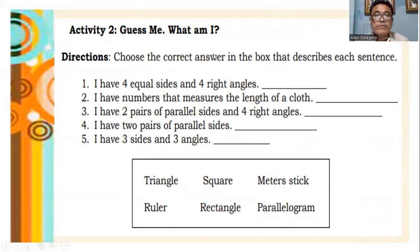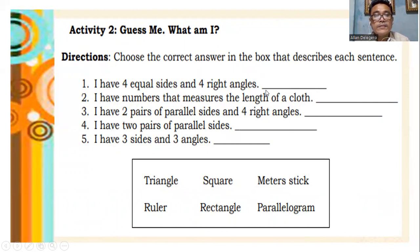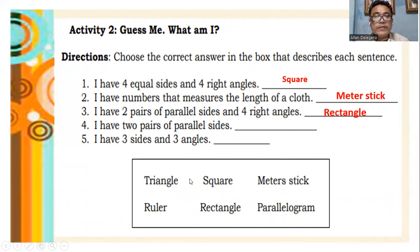Choose the correct answer in the box that describes each sentence. It's guessing time — you have to guess the figure being described. Numbers 1 through 5. For number 1, the answer is square. Number 2, meter stick. Number 3, rectangle. Number 4, parallelogram. And number 5, triangle.